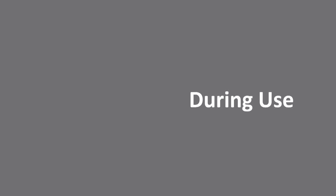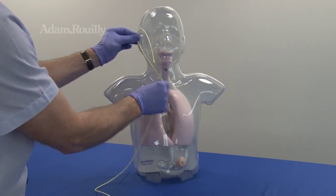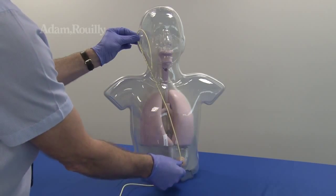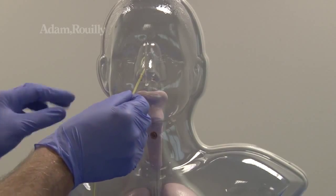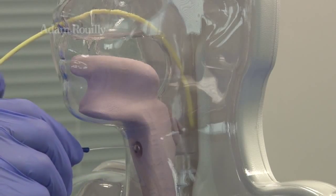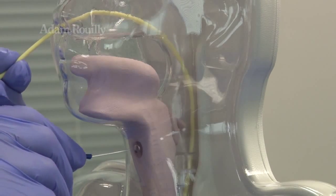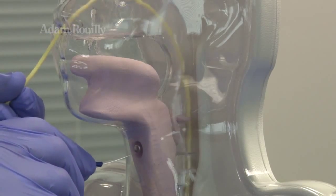During use, the nasogastric tube can be measured before insertion as on a real patient. The movable epiglottis simulates swallowing, whilst the transparent anatomy aids visualization of correct nasogastric tube positioning.